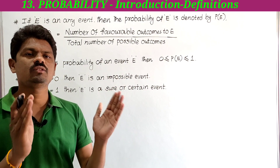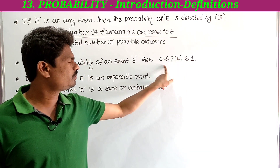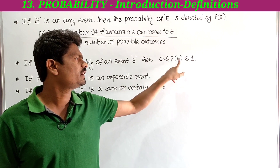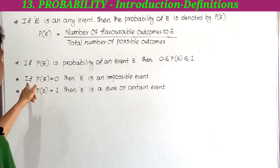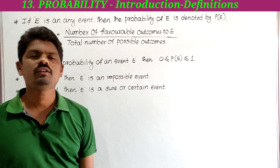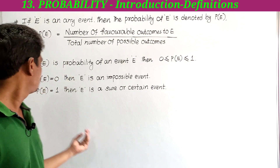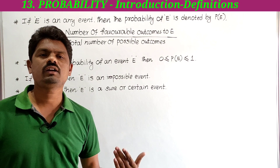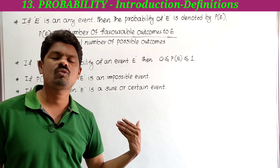The probability of an event P(E) always lies between 0 and 1, including 0 and 1: 0 ≤ P(E) ≤ 1. When P(E) = 0, the event E is an impossible event. When P(E) = 1, the event E is a sure or certain event.